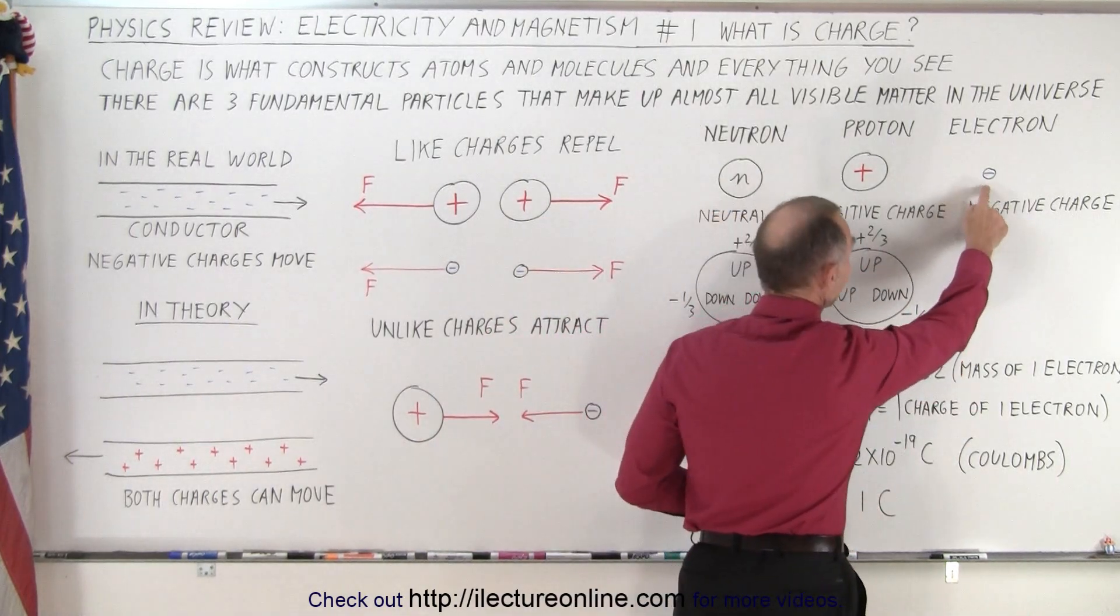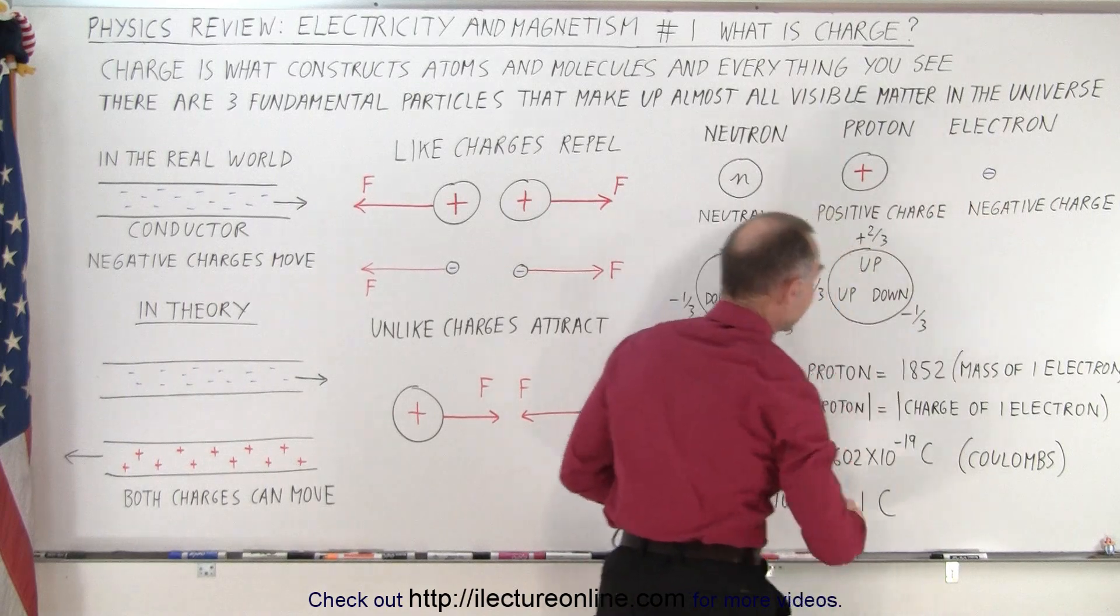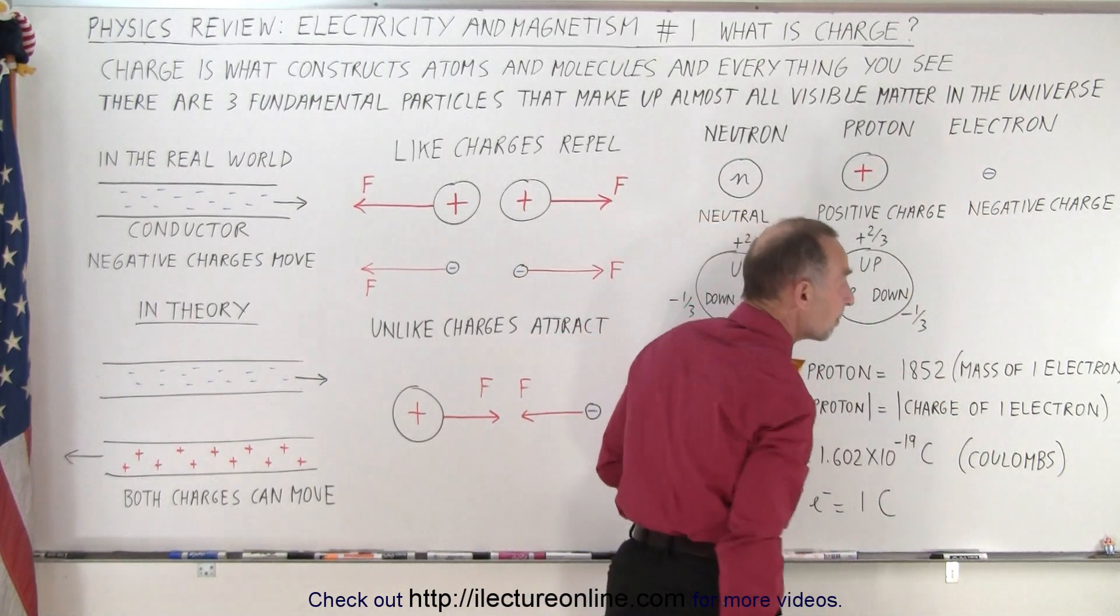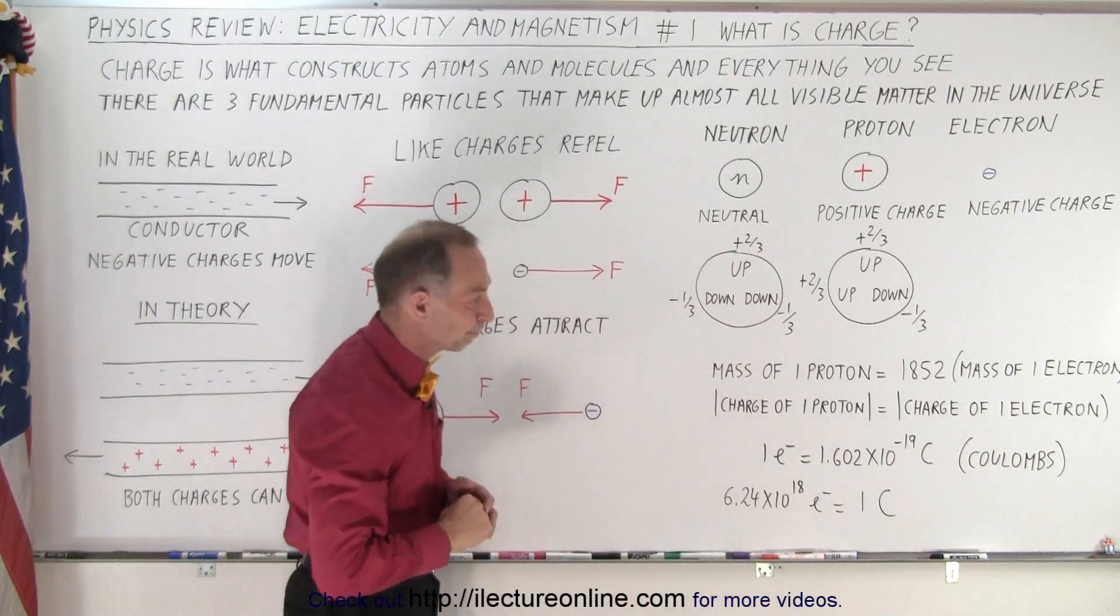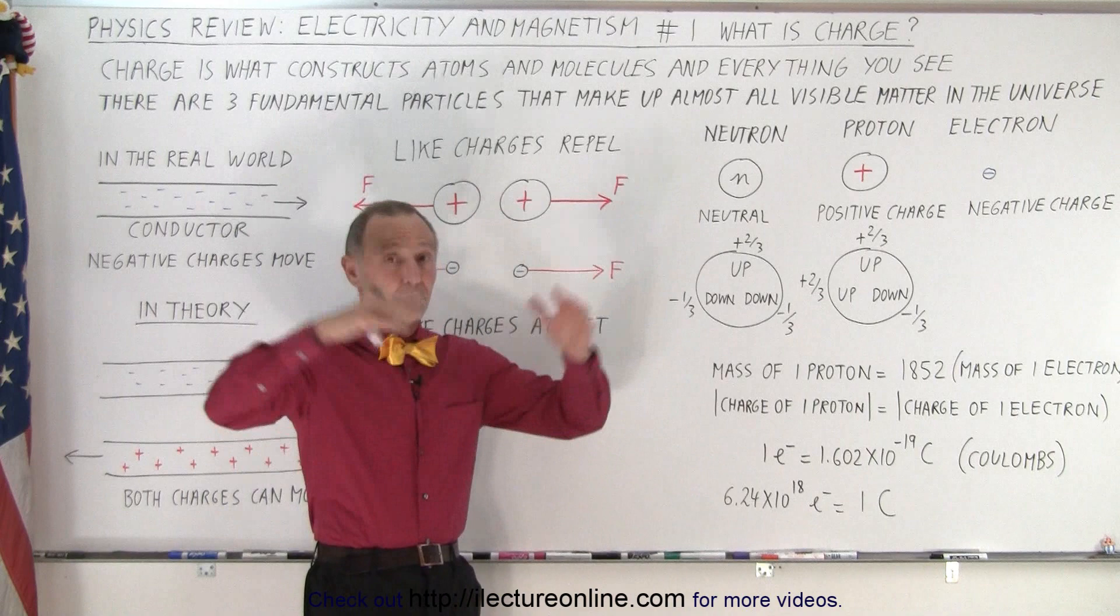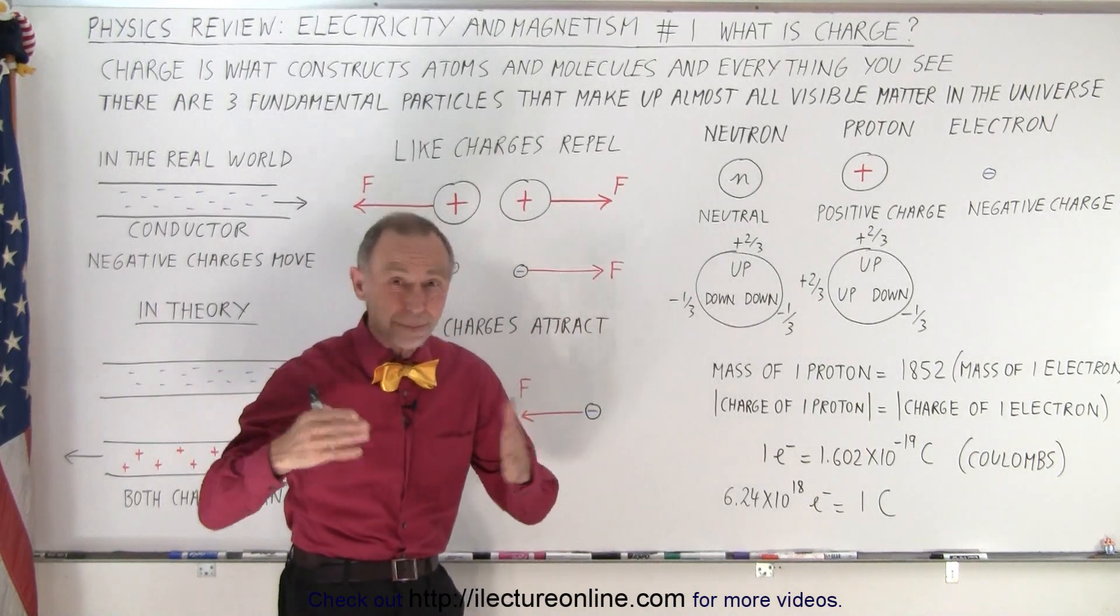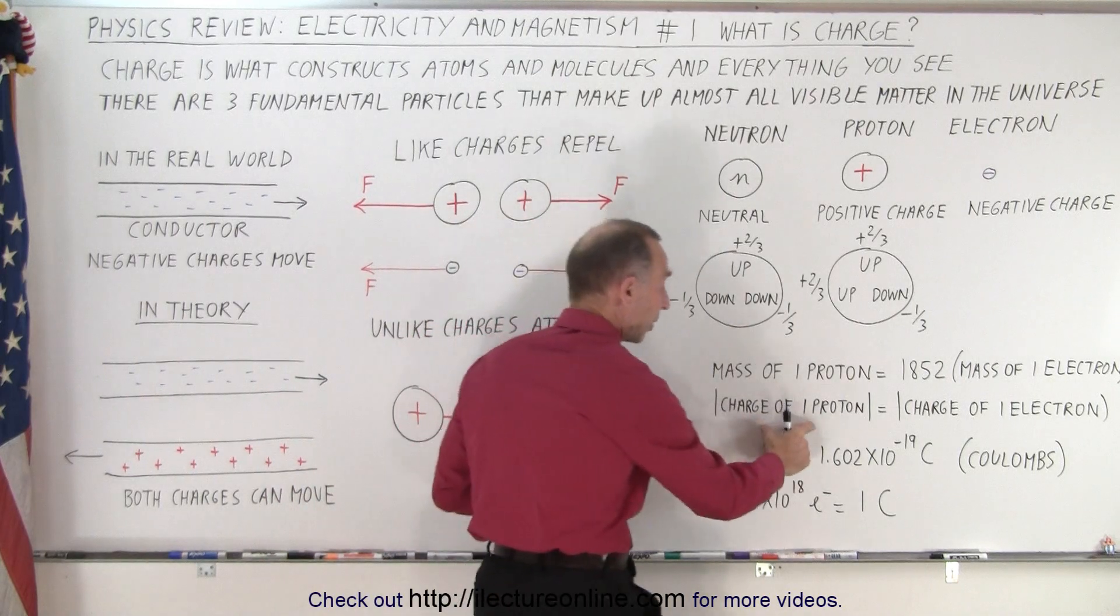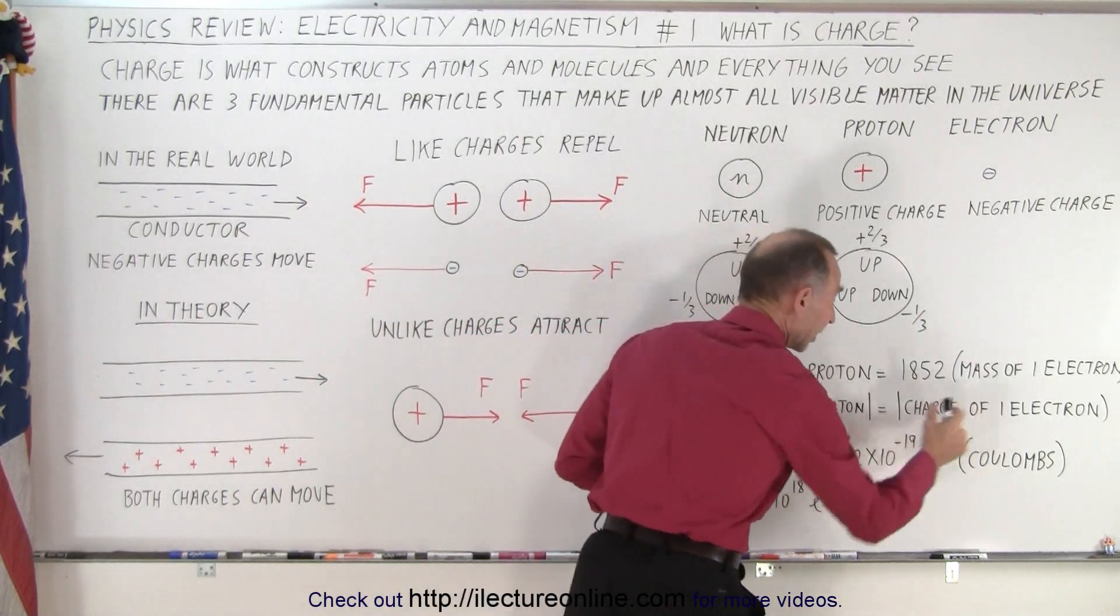Now an electron in mass is much smaller than a proton. It turns out a proton is about 1,852 times the mass of a single electron. Now, the charge in a proton, even though it's much bigger, is exactly the same in magnitude as the charge of an electron, except that the proton is positively charged and the electron is negatively charged.